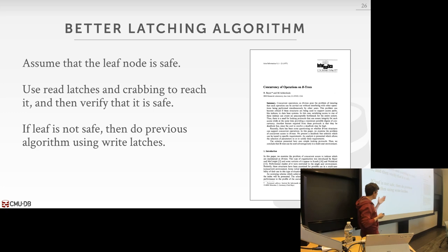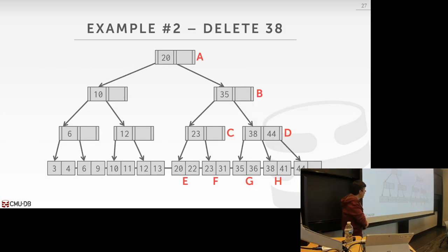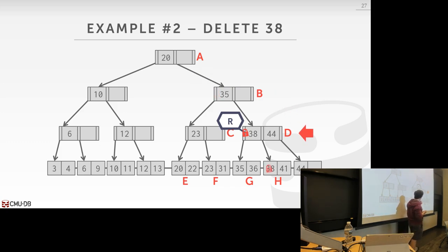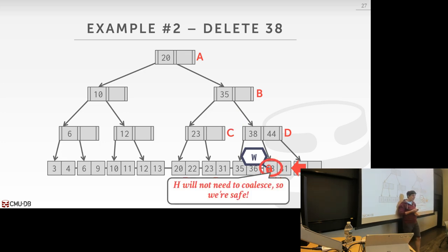This is from a 1977 paper by Bayer and Schkolnick — sometimes called the Bayer-Schkolnick algorithm, or optimistic latch crabbing. For delete of 38: instead of write latches, take read latches all the way down. When getting to leaf node H, acquire the write latch. Recognize that it's a delete and no split/merge is needed — the gamble paid off and no restart is required.